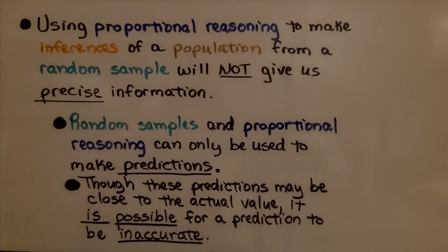Using proportional reasoning to make inferences of a population from a random sample will not give us precise information. Random samples and proportional reasoning can only be used to make predictions. Though these predictions may be close to the actual value, it is possible for a prediction to be inaccurate.